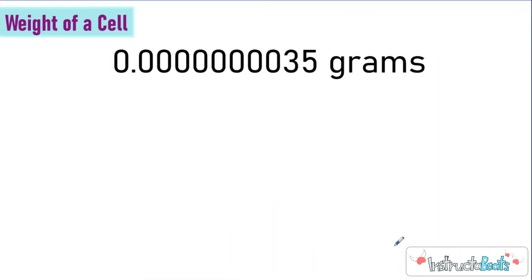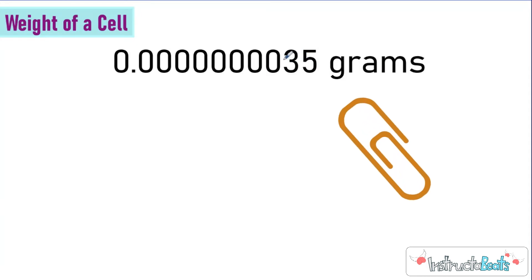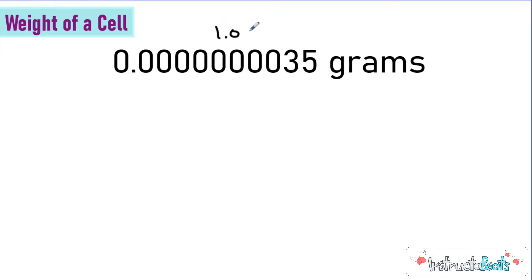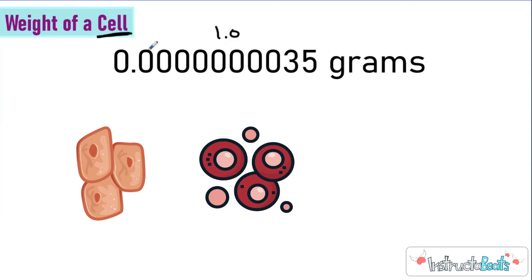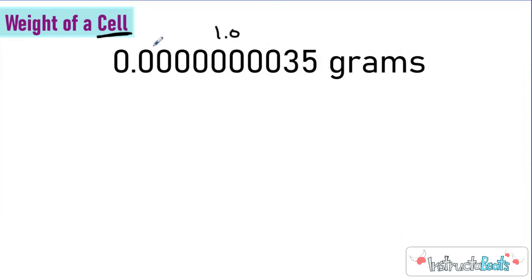Now let's take a look at the weight of a cell. I'm not even going to try to say this one in decimal form — we have 0.0000000035 grams. When I think about a gram, I think about the weight of a small paperclip. This is the weight of a human cell — maybe a skin cell, hair cell, just kind of a cell — something super tiny that you have to look at under a microscope. We don't want to keep writing this if we're writing a paper, that's too many digits.